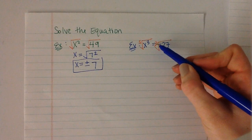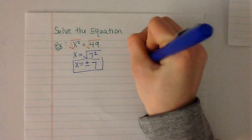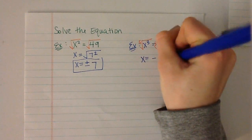So, since we have an odd exponent, the negative is going to come out in front. So we have x equals the negative cube root of 27.